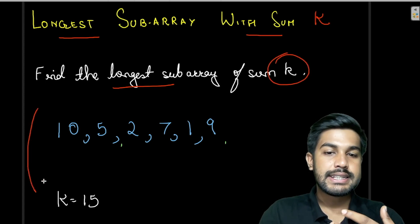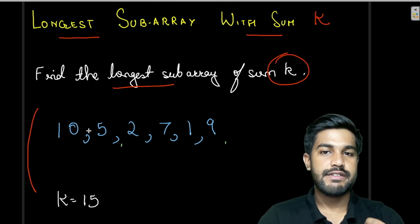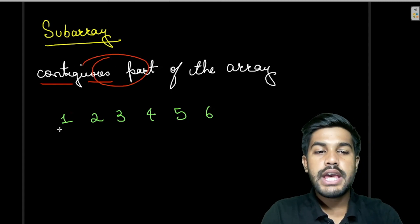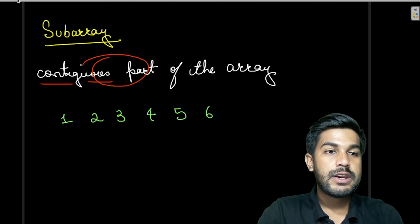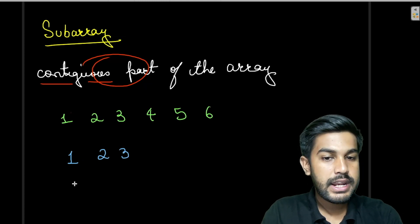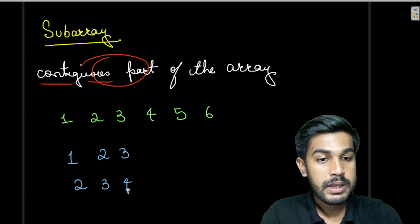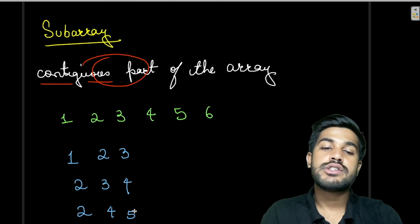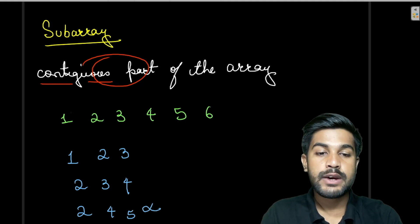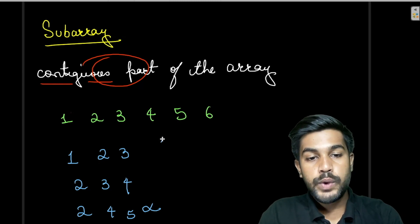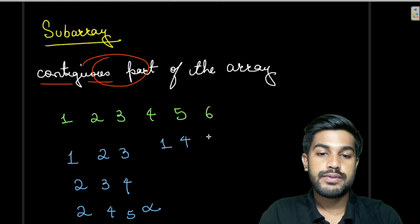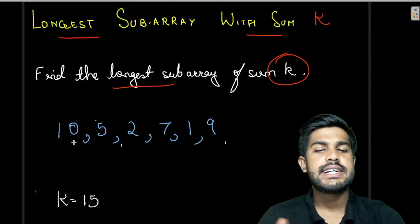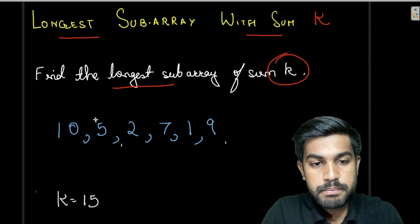Before evaluating the test case, let us first quickly revise our concepts of subarray. A subarray is nothing but a contiguous part of the array. So if the given array is 1, 2, 3, 4, 5, 6, then we consider 1, 2, 3 as a subarray and 2, 3, 4 as a subarray, but we do not consider 2, 4, 5 because 3 is not there, so it is not contiguous. We also don't consider 1, 4, 5 because 2 and 3 are not included.